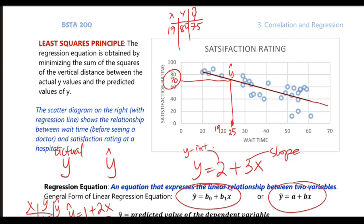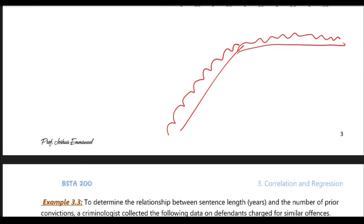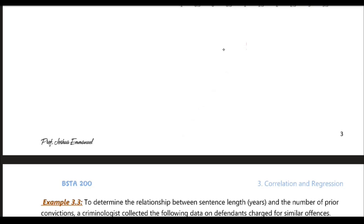We obtain that equation and use it to estimate, and sometimes to project a little into the future — but we don't want to go too far, because values might change outside a particular range. For example, when kids are young, the amount of food they eat increases, but when they reach a certain age, it doesn't change much anymore. That's why we don't use the regression line to project too far outside the range of data values we have.